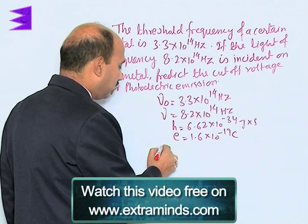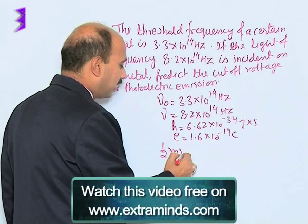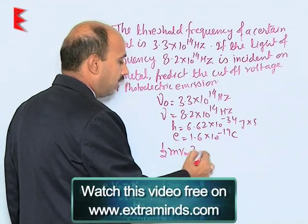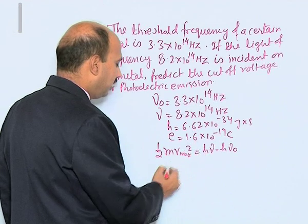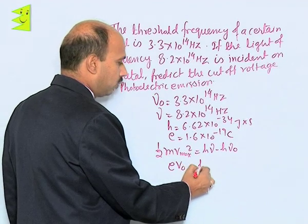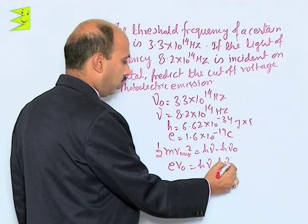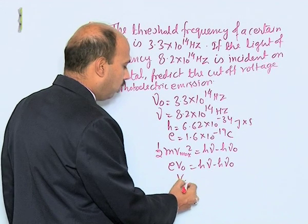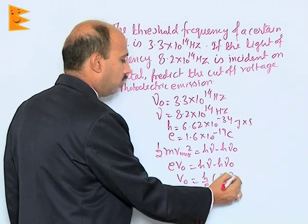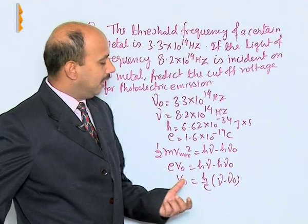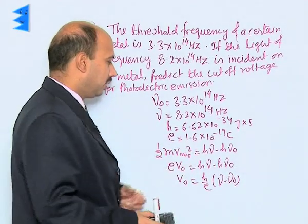We know that ½mv²max = hν - hν₀. So we can write eV₀ = hν - hν₀. Therefore, V₀ = (h/e)(ν - ν₀). Put all these values that are given here.